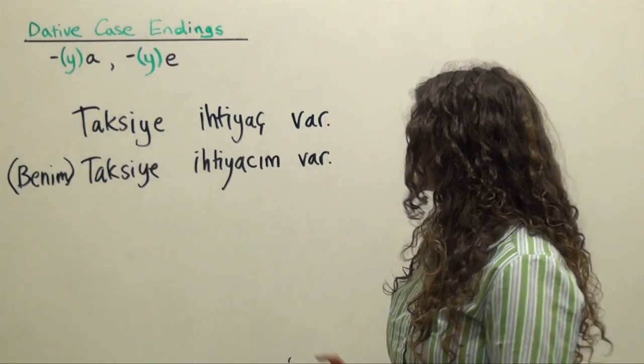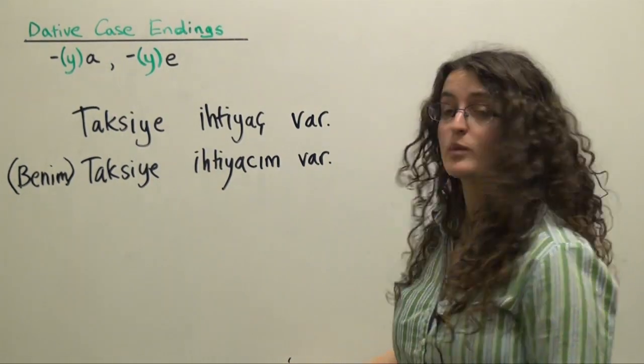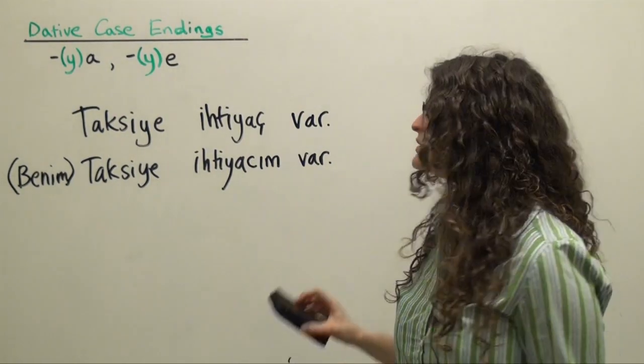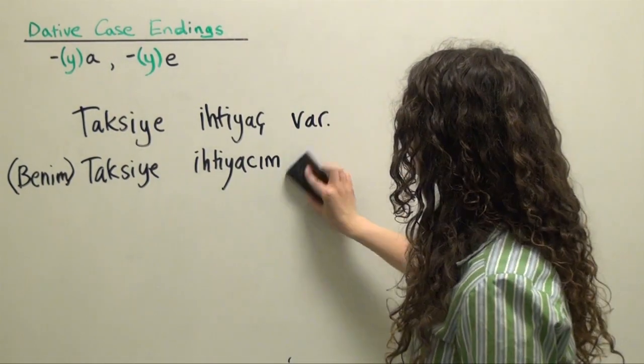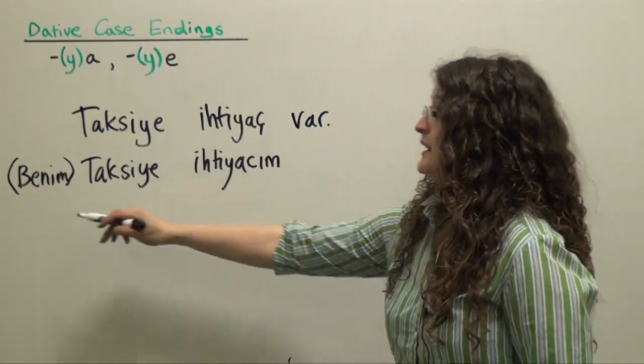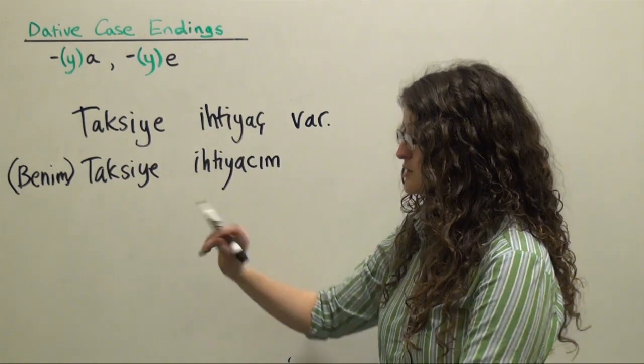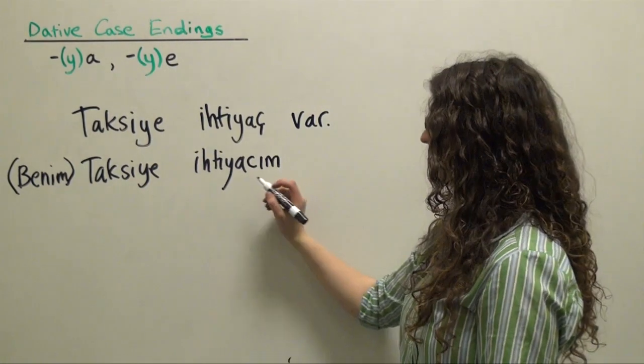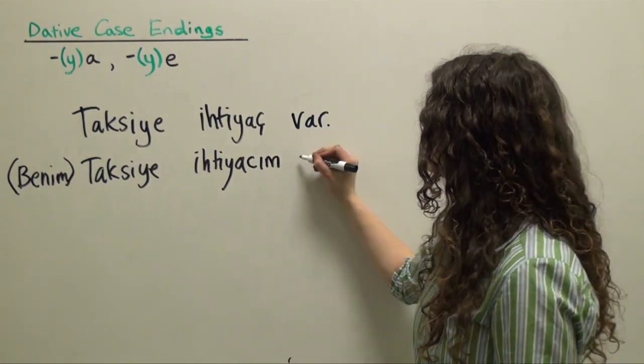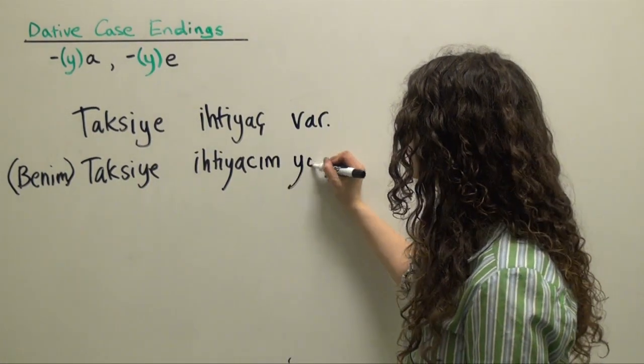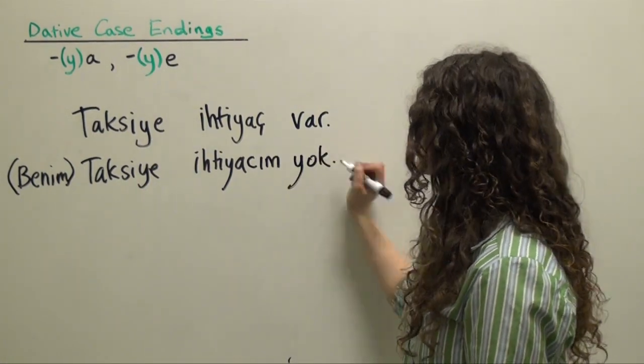We can do the exact same thing with 'yok.' If we want to say 'I don't need a taxi,' we can say — optionally 'benim' — 'taksiye ihtiyacım yok.' My need for a taxi does not exist. I don't need a taxi.